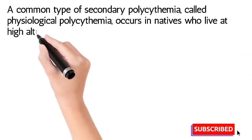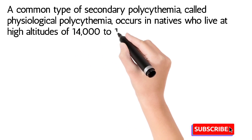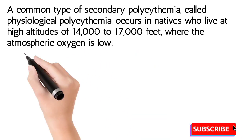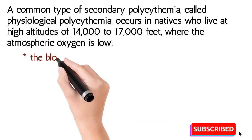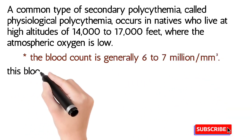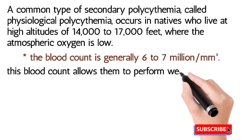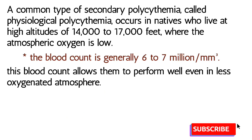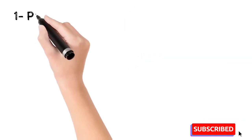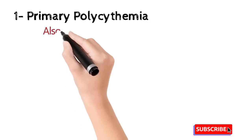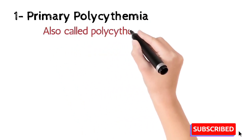A common type of secondary polycythemia is called physiological polycythemia. It occurs in natives who live at high altitudes of about 14,000 to 17,000 feet, where the atmospheric oxygen concentration is very low. To compensate, the body starts developing more RBCs, with a count generally of six to seven million per millimeter cube. This allows them to perform well in the less oxygenated atmosphere — it is a physiological compensation, not a pathological condition.